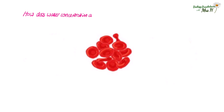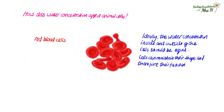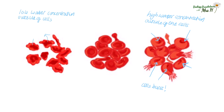How does water concentration affect animal cells? Ideally the water concentration inside and outside of the cells should be equal, so the cells can maintain their shape and therefore their function. If the surroundings have a water concentration that is too high, water will move into the cells by osmosis and the cells will burst because there's no cell wall to protect them. If the cells are surrounded by a very low water concentration, the cells will shrink and won't be able to function properly. It is essential that water concentration is balanced in our bodies, and we will learn about this when we do homeostasis and the kidney.